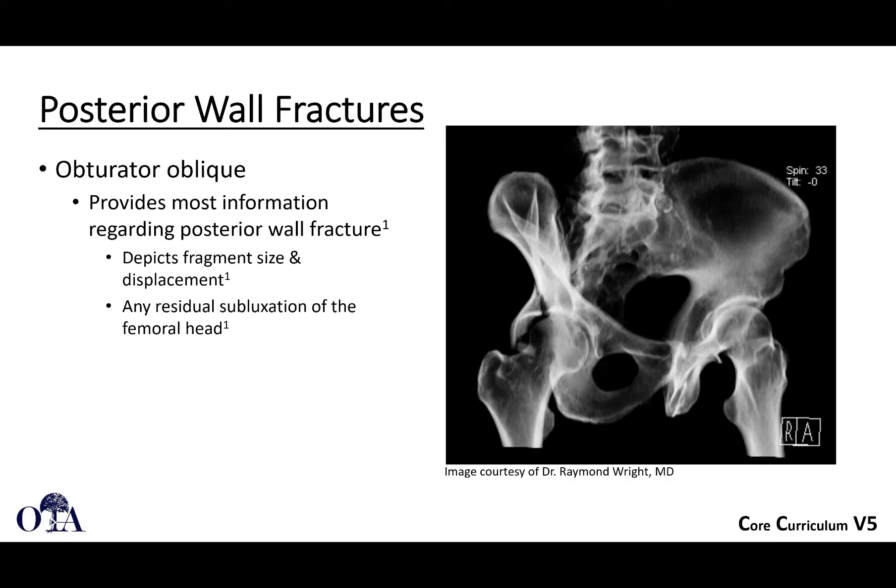What you're not going to see on planar radiographs is marginal impaction. With marginal impaction, you are essentially getting almost like a joint depression of the articular surface. It's important with posterior walls that you look for this — it will not be seen on x-ray. With marginal impaction, as opposed to the joint surface being flat, the joint surface will actually show this impaction where the articular surface was pushed inward. It's not well seen on planar radiographs; we'll discuss this more when we get to CT scans.